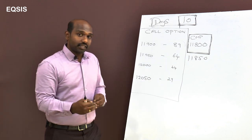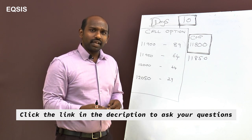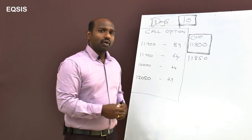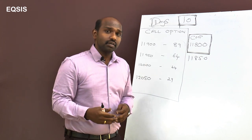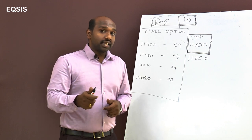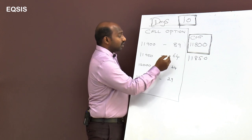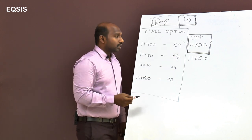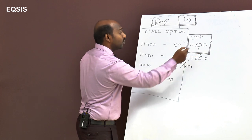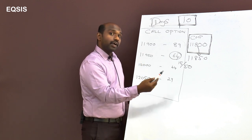When you understand this, the next level of understanding is delta. Delta is very simple — it is the change in the option price with respect to the change in the underlying price. Whenever the underlying price moves up, the call option price also tends to go up, provided there is a reasonable amount of time remaining. That's why each strike has a different delta.